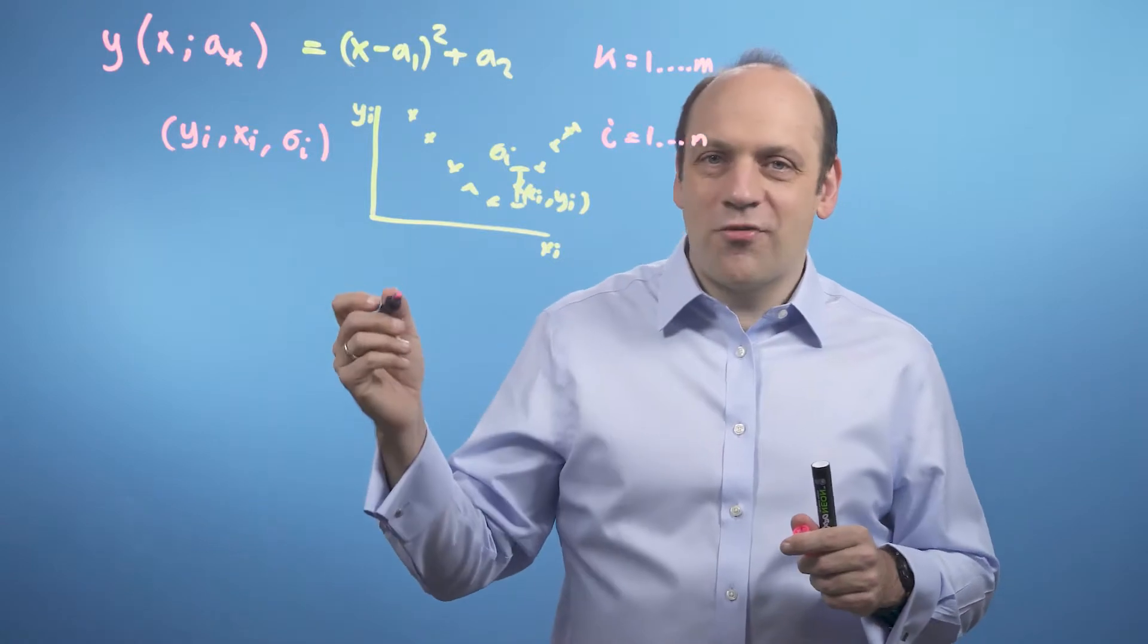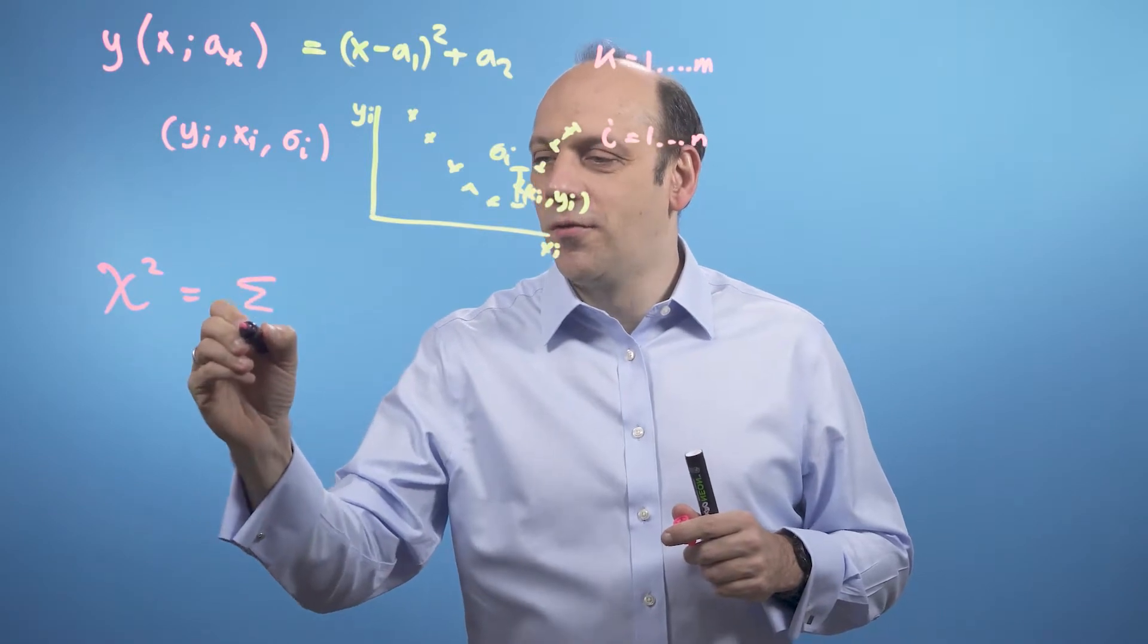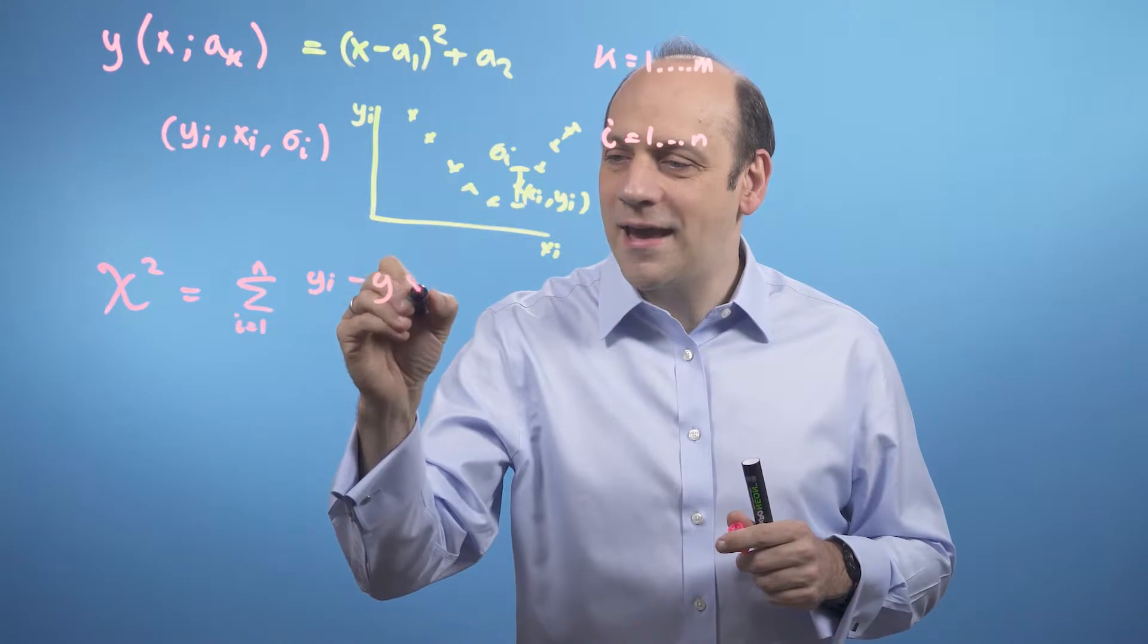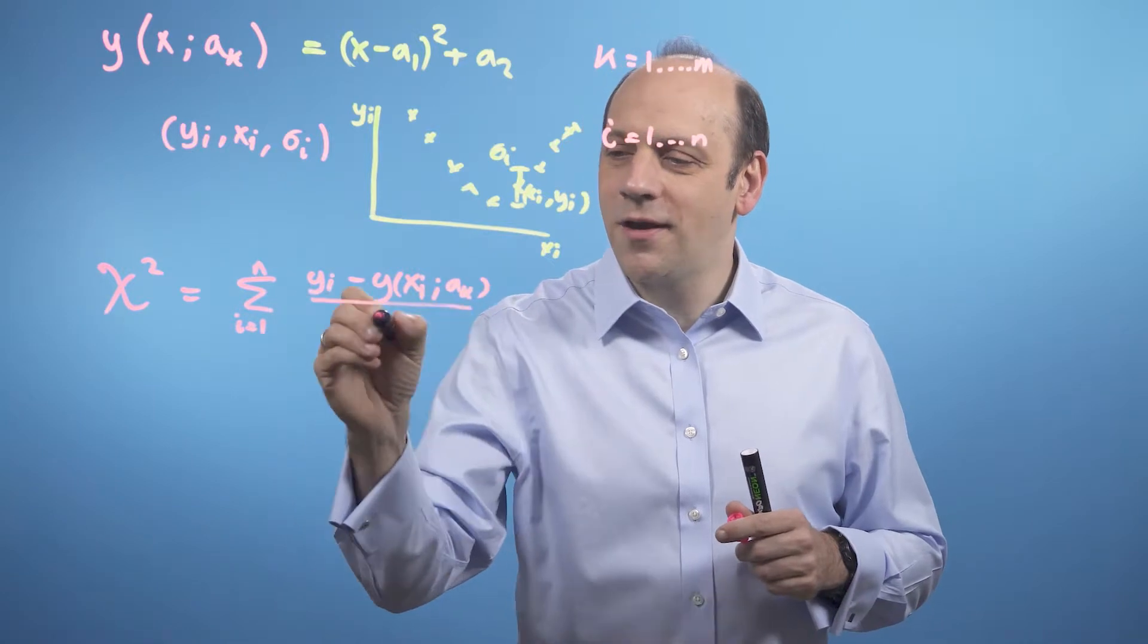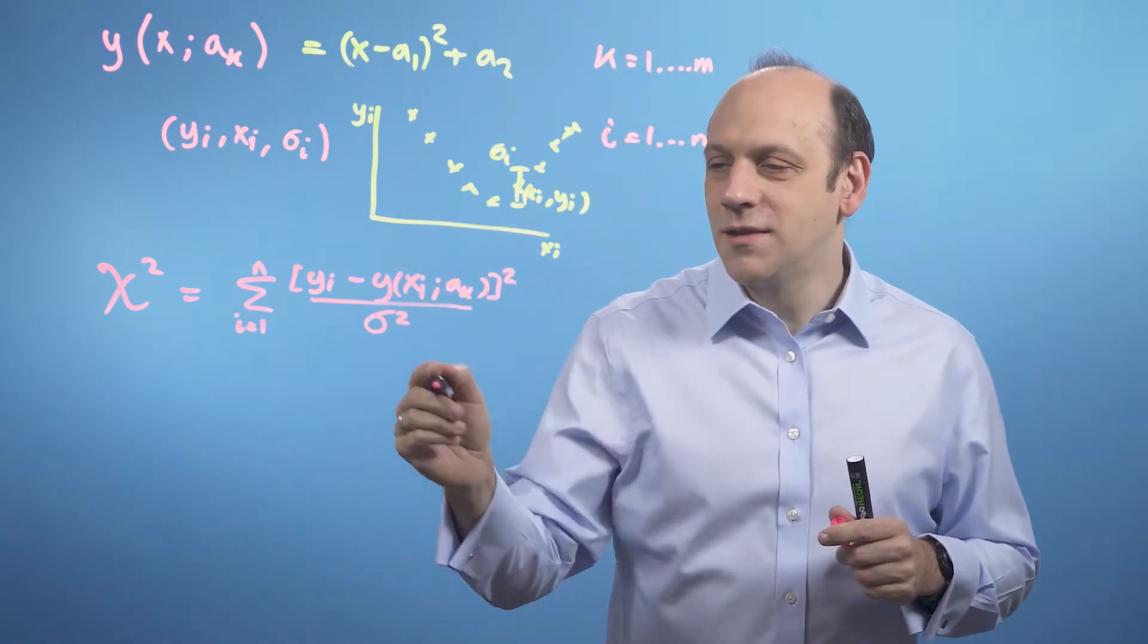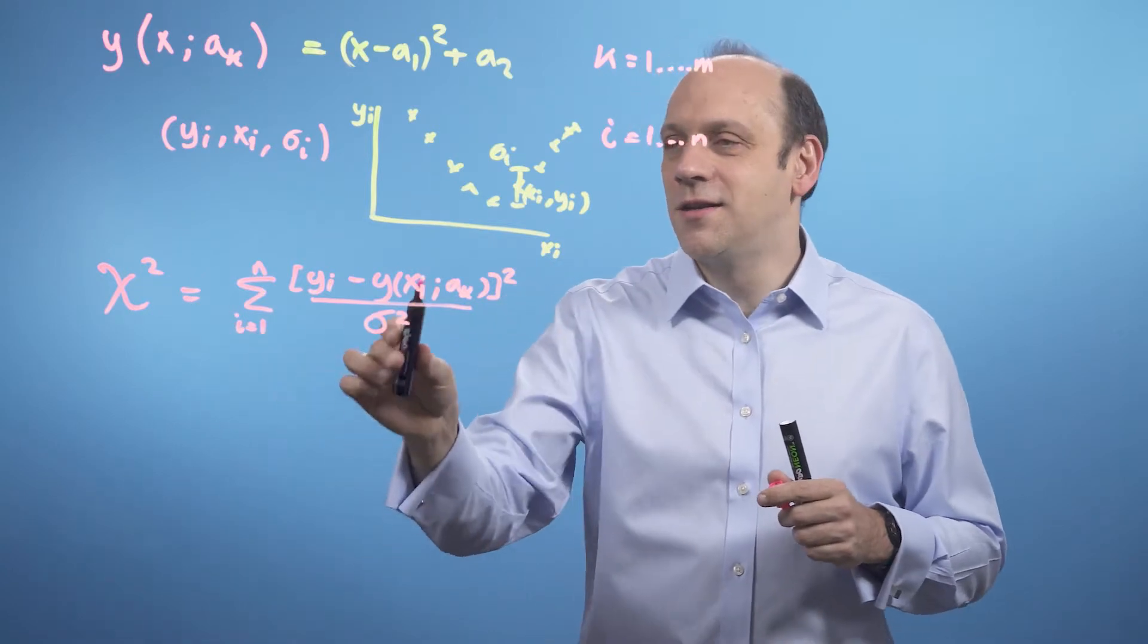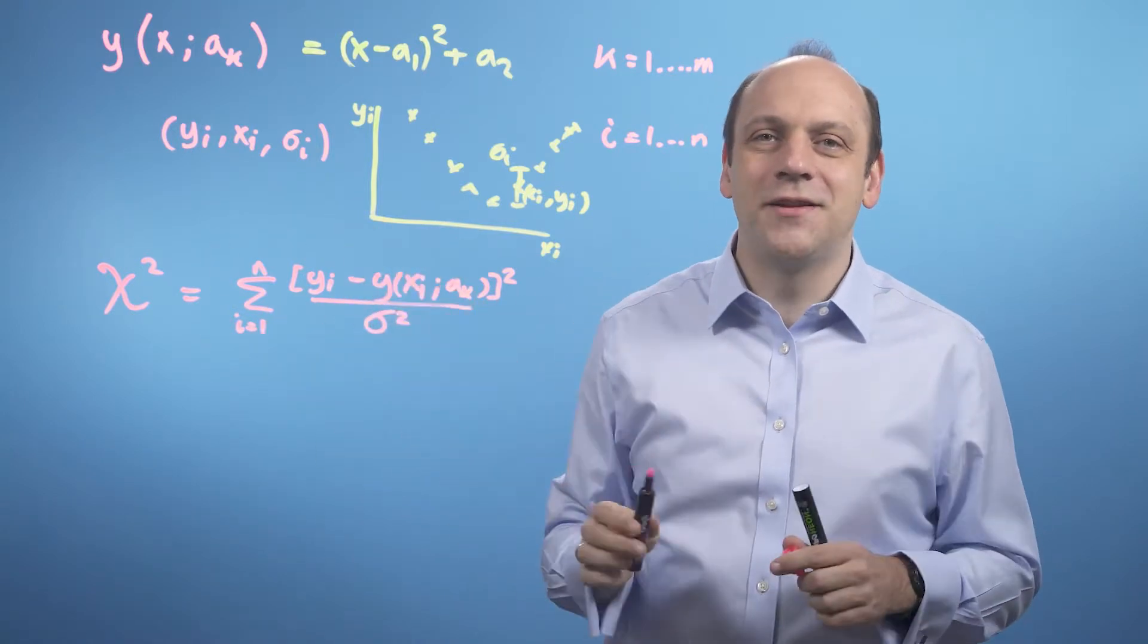Then I'm going to define a goodness of fit parameter, chi squared, as being the sum over all the data points i of the difference between the yi and the model of xi with its parameters a_k. And I'm going to divide all of those by sigma squared, and I'm going to take the squares of the differences. So what I'm doing here is I'm penalizing each of these differences by an uncertainty, sigma squared, when I make chi squared, so that uncertain data points have a low weight in my sum of chi squared, so that they don't affect the fit too much.